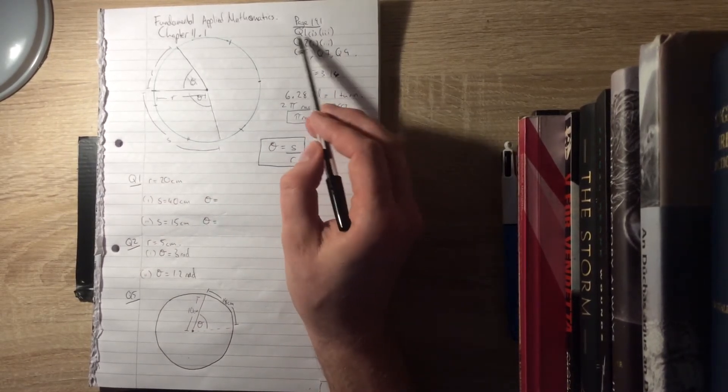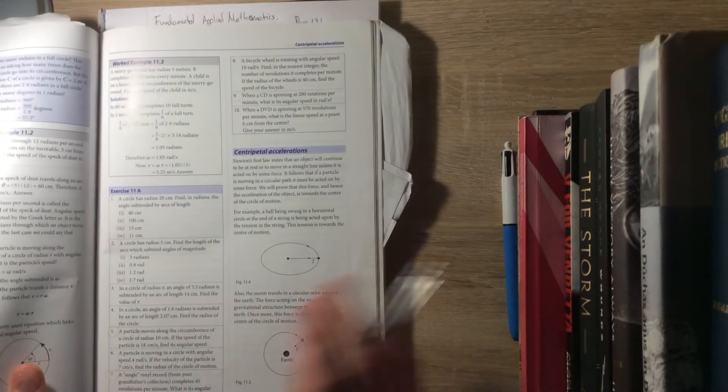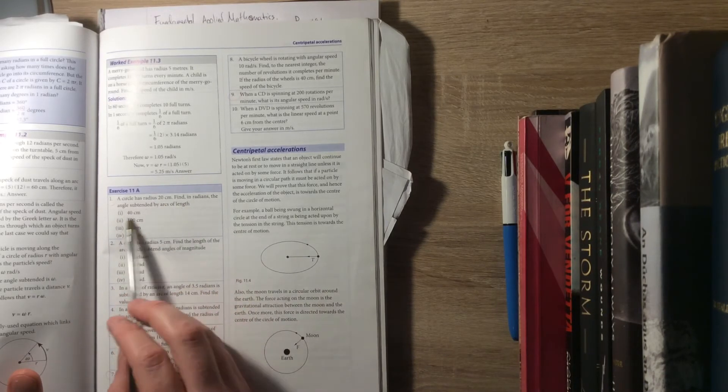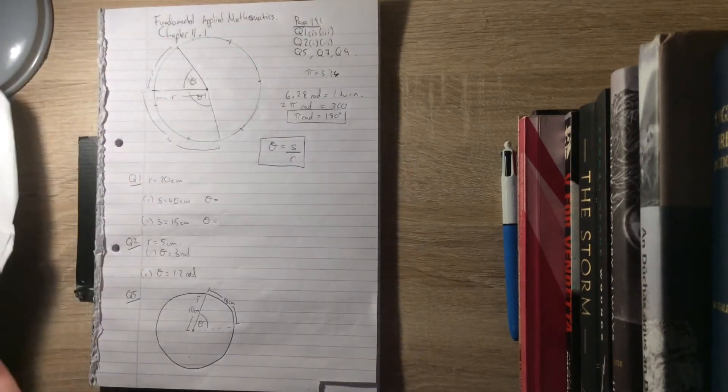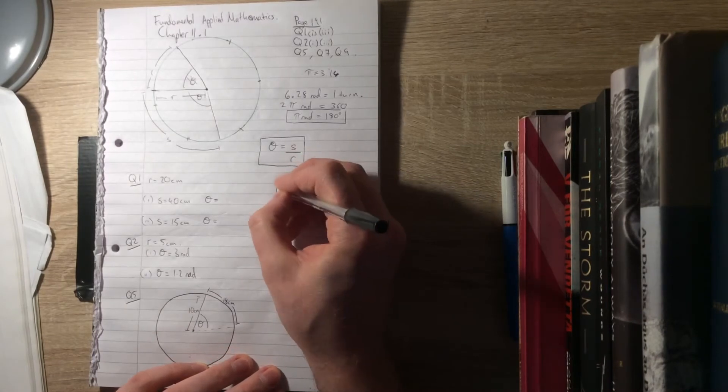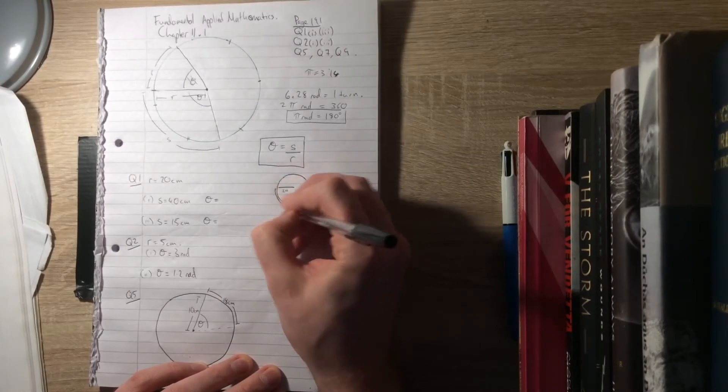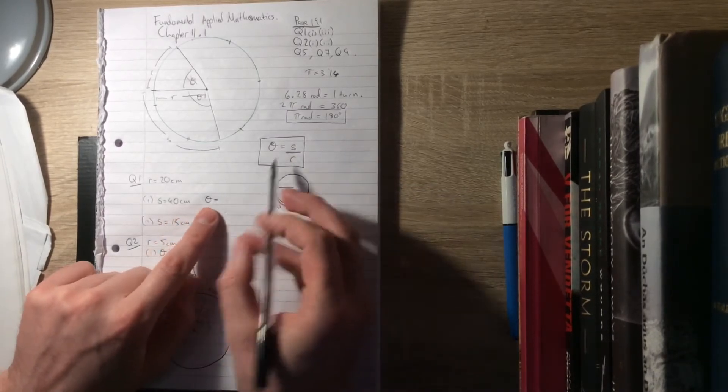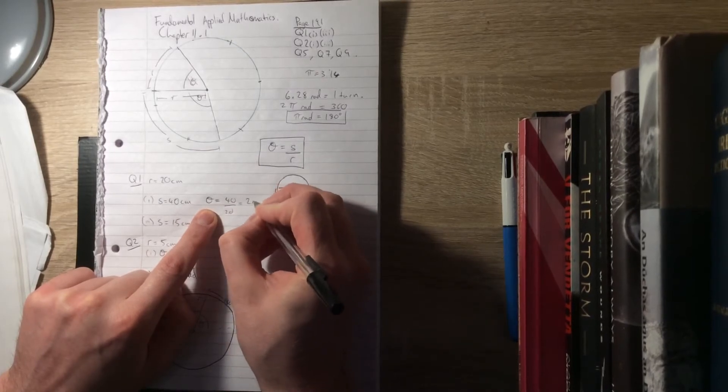With that in mind, we should be able to do all of these questions on page 191. Question 1: The circle has radius 20 centimeters. Find in radians the angle subtended by an arc of length 40 centimeters. Well, that's two radius lengths, so that's two radians. Using the formula θ = s/r, it's 40 divided by 20, and the answer is two radians.